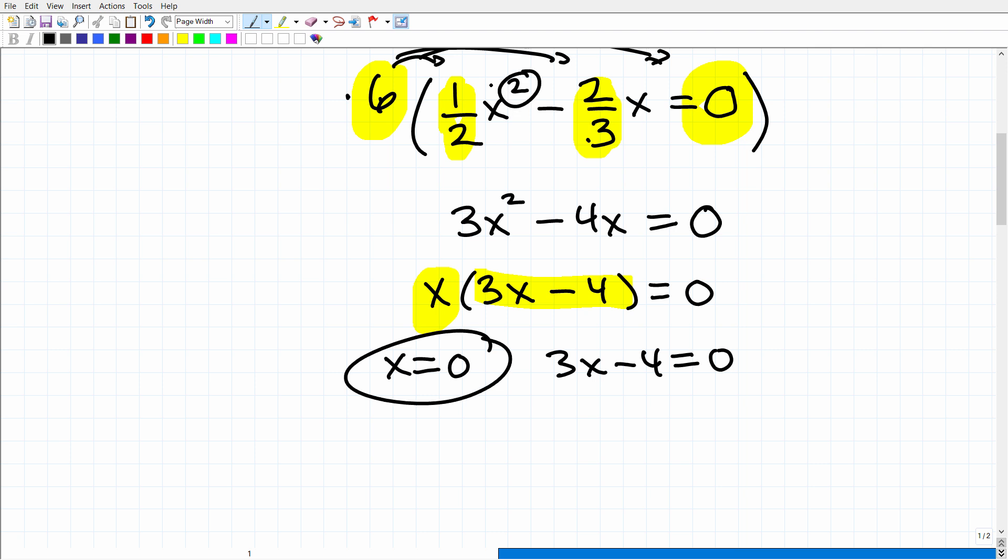Remember in a quadratic equation, you always have two solutions. So let's finish up here. Three x is equal to four. I'm going to move that four to the other side. So x is equal to four thirds. There are our two solutions: x is equal to zero and x is equal to four thirds.